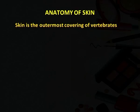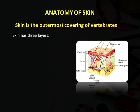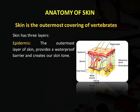Since cosmetic products are applied on the skin, we must have some idea about the anatomy of the skin. Without going into the details of the biology, I will briefly cover what skin is and how it is made up. Skin is the outermost covering of vertebrates and consists of three layers. The first outermost layer is called the epidermis, and it provides the waterproofing barrier and creates our skin tone.